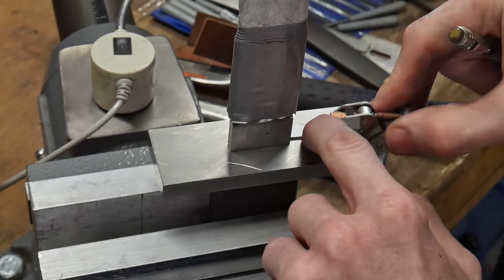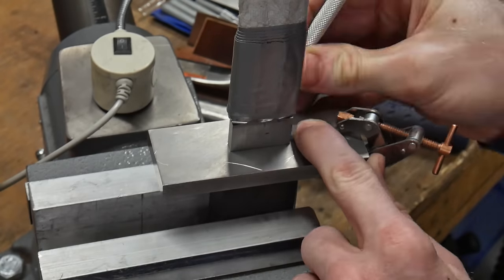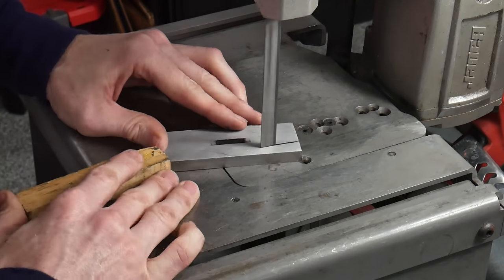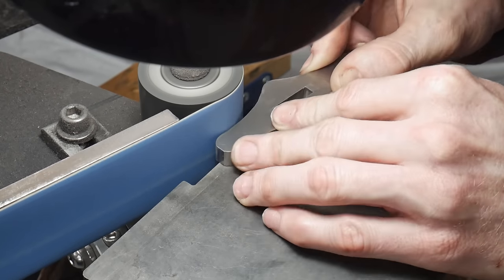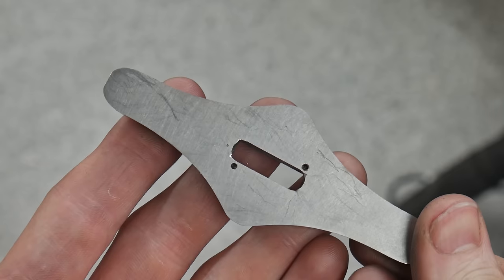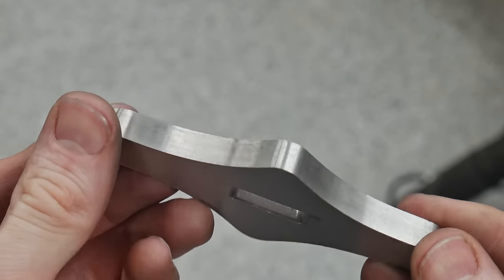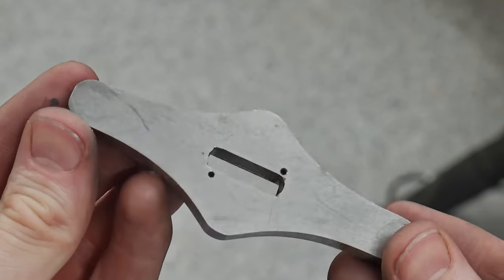Using the bandsaw and the 2x72 belt grinder, I remove material down to my scribe lines. I brought the sides up to a 320 grit finish. This is really one of the nice use cases for a grinder that can tilt horizontally, since all my scratches will be going in the appropriate direction.